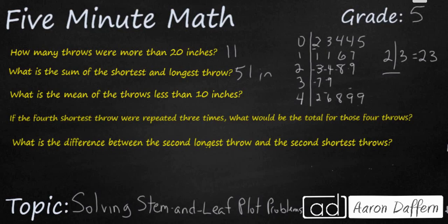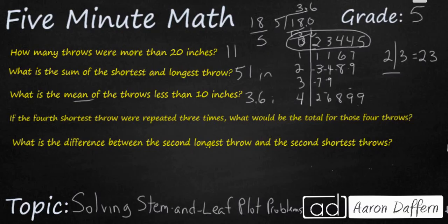Now when you look at the mean of the throws less than 10 inches, we're looking at this row right here. When you add up 2, 3, 5, 4, and 4, that is going to give you a total of 18 divided by 5 numbers. So that's going to be 18 over 5. To figure out what that is, we're going to divide 5 into 18 and that's going to go 3. We're going to add a decimal here and that's going to be 3.6. So our mean or average is going to be 3.6 inches.